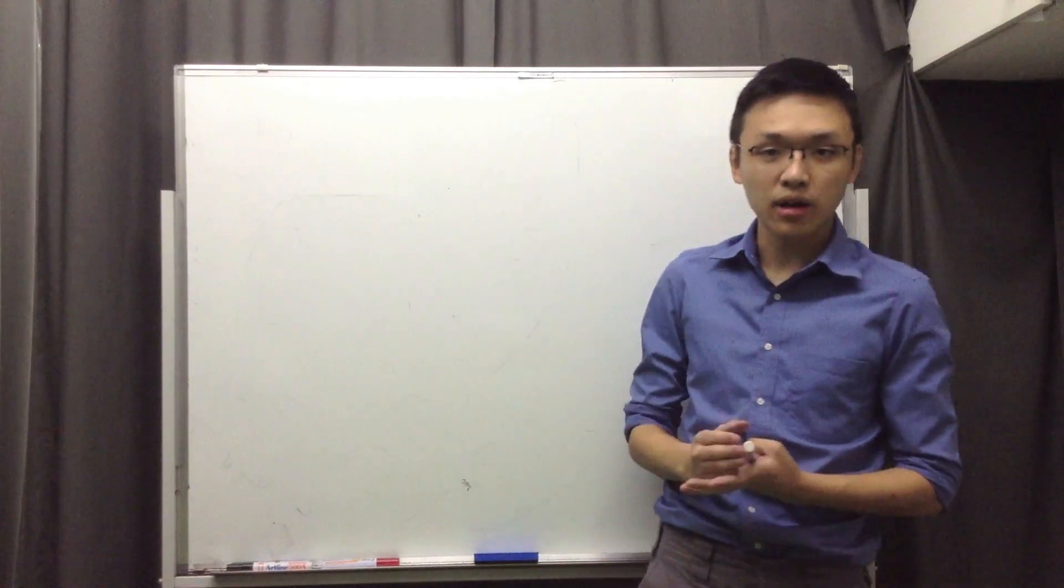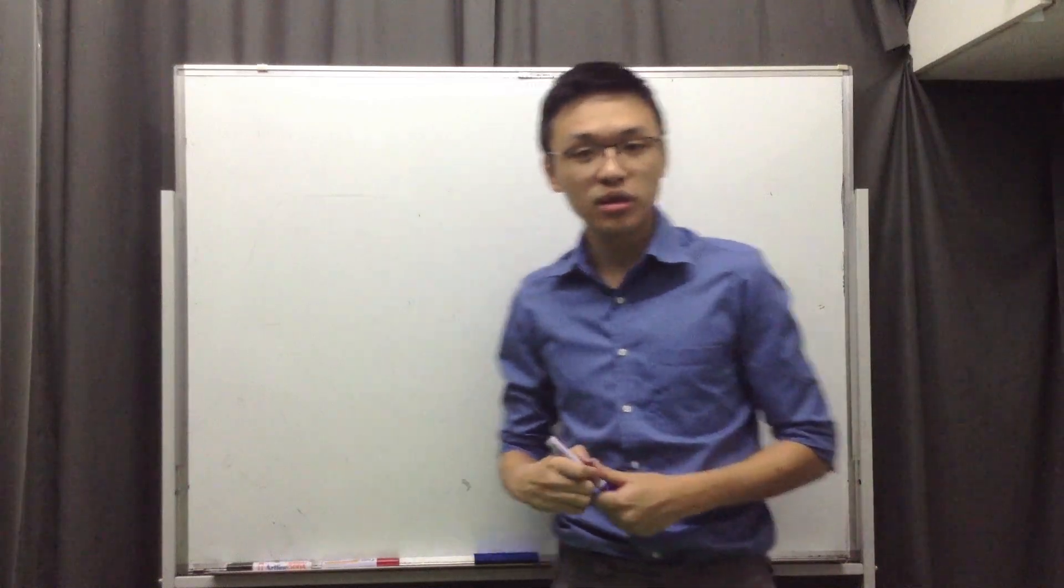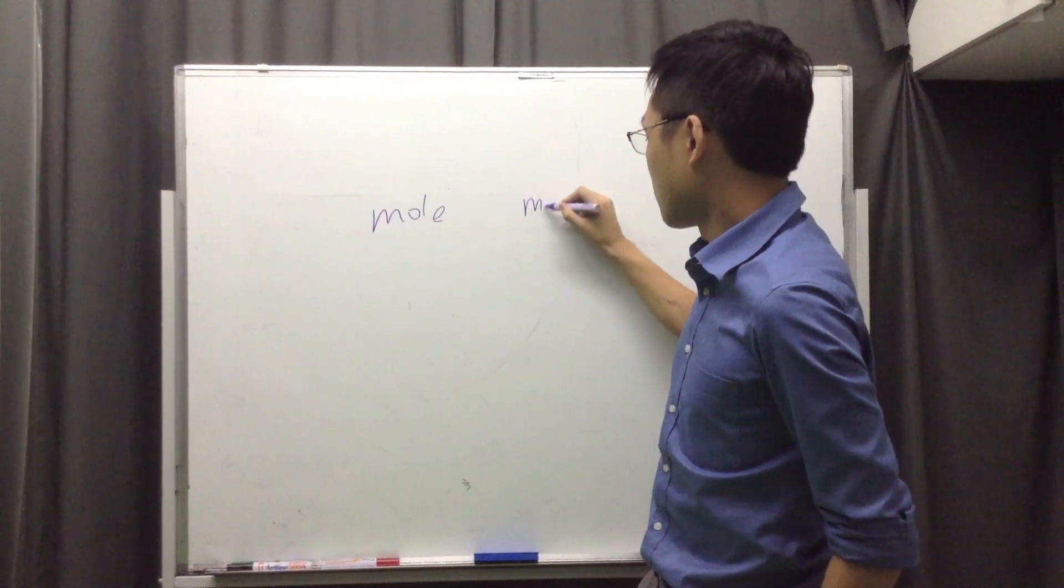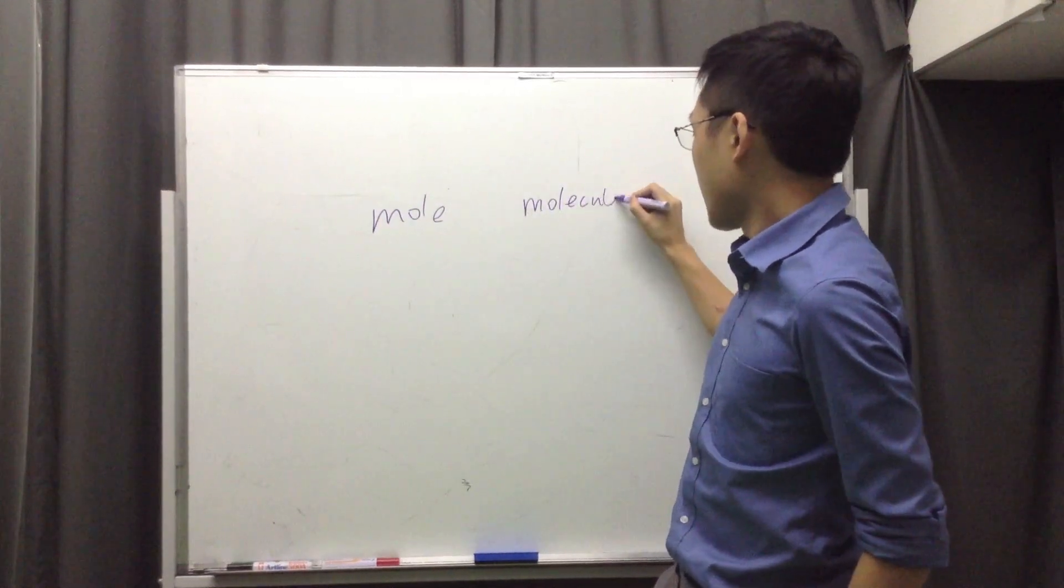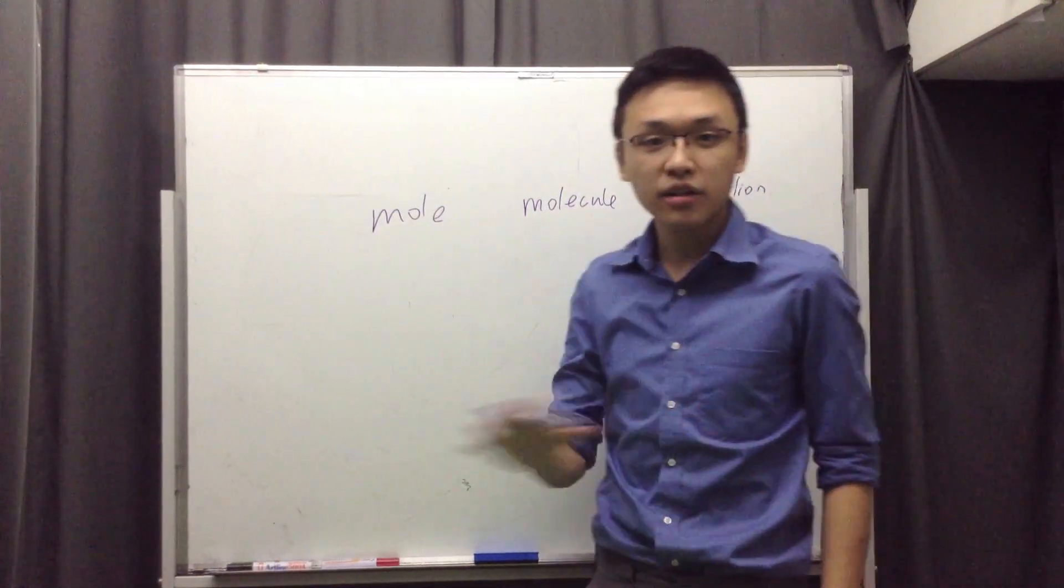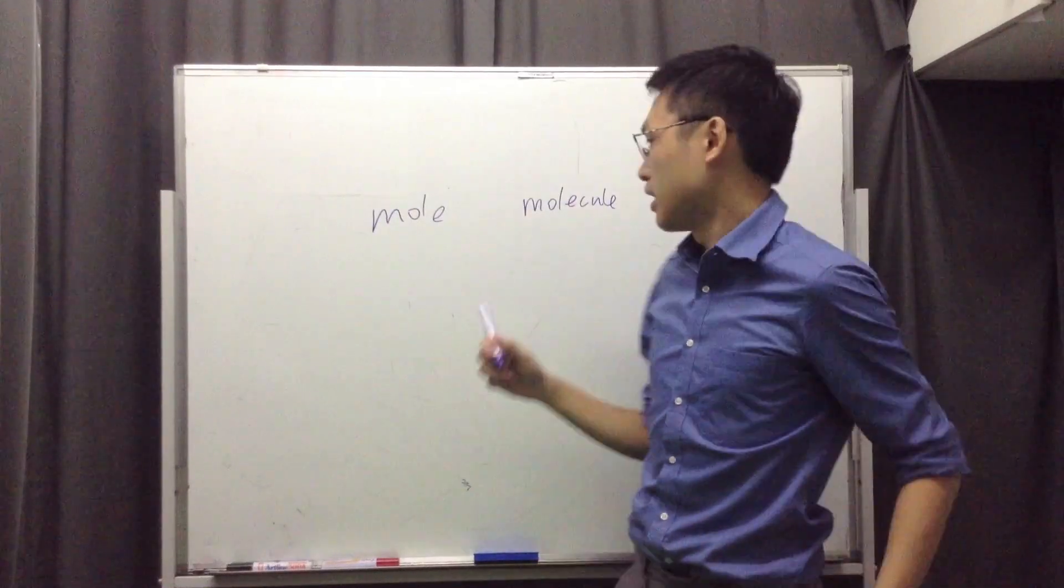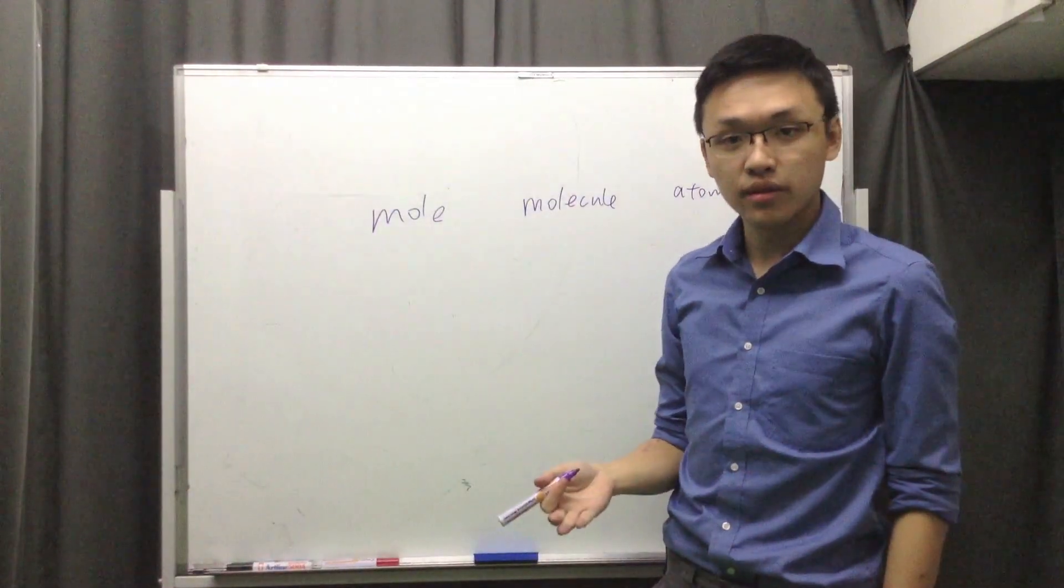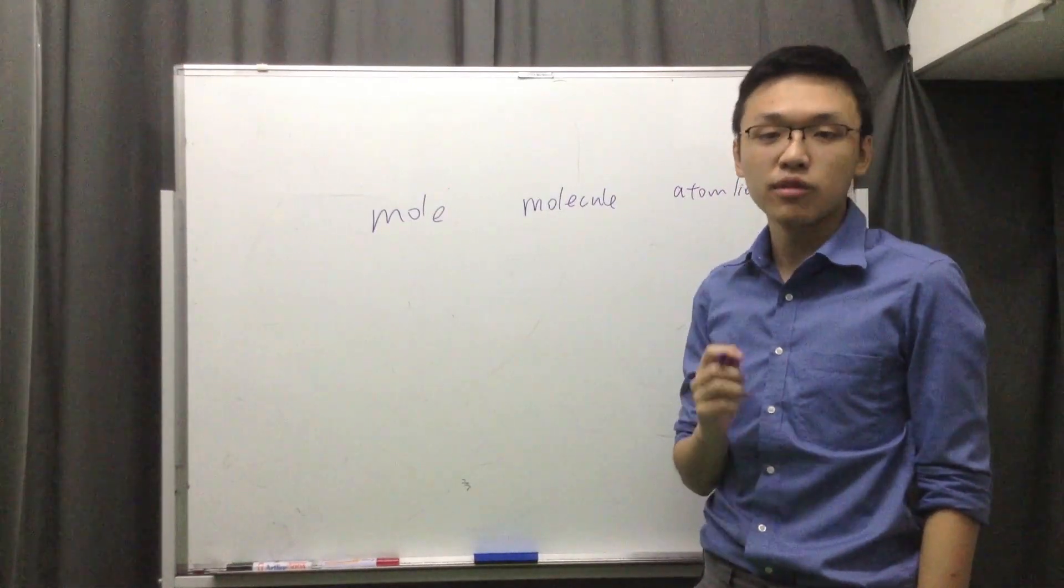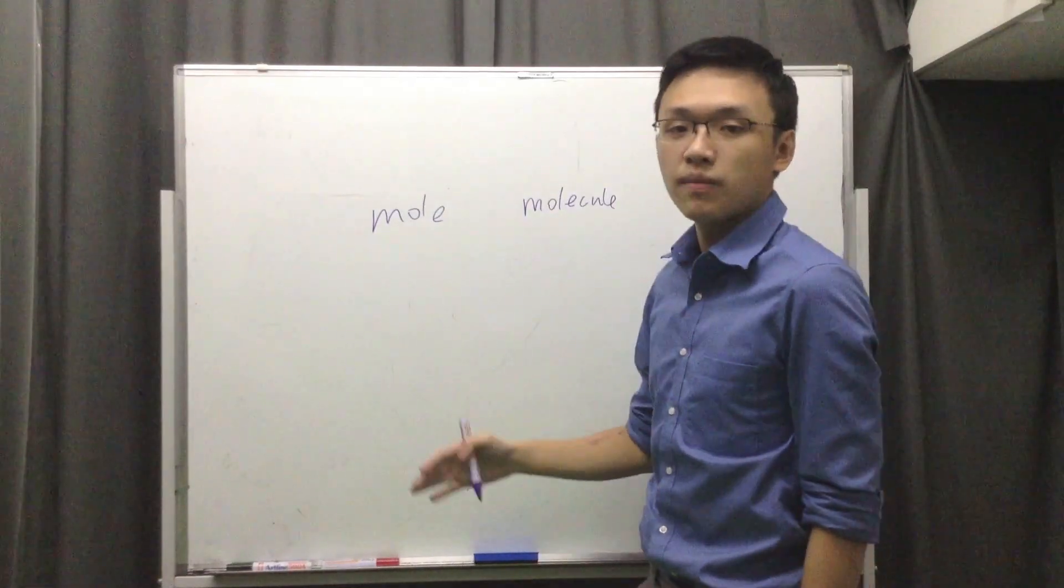And in that part, they're always asking you to convert between units. So there are three units you need to know. First of all, there's the mole, there's the molecule, and there's the atom or ion. So basically in the entire sub-chapter, they're asking you to go from one to the other. That's all there is to it. But I don't know why a lot of students get confused with these units. Hopefully by the end of this video, you'll find it as easy as I do. So first of all, what is a mole?